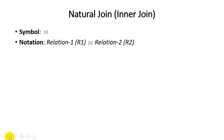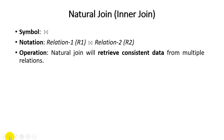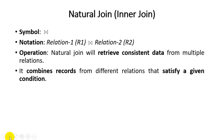We will start with the natural join. The symbol used for natural join is the natural join symbol. The notation is: relation R1 natural join relation R2. Whenever we study a join operation, we are using two different relations — meaning a user wants to retrieve a combination of tuples belonging to multiple relations. The natural join retrieves consistent data from multiple relations.